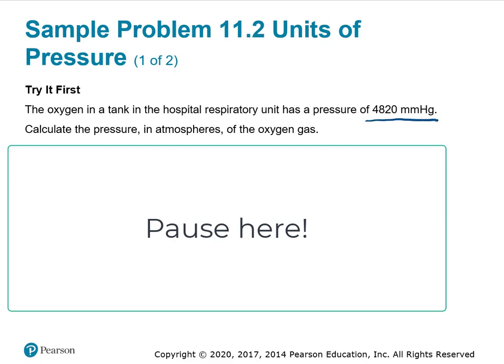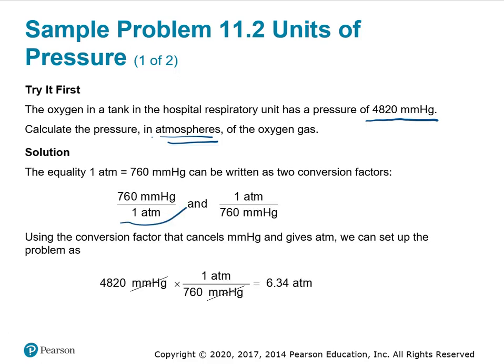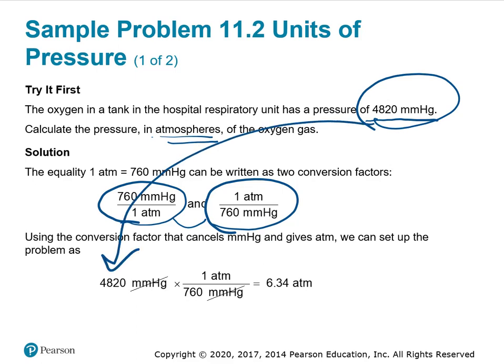The oxygen in a tank in the hospital respiratory unit has a pressure of 4,820 mmHg. Calculate the pressure in atmospheres. Knowing that there's 760 mmHg in one atmosphere, we start with 4,820 mmHg. Make sure that 760 mmHg is on the bottom so we can cancel those out, and we get 6.34 atmospheres with 3 significant figures.